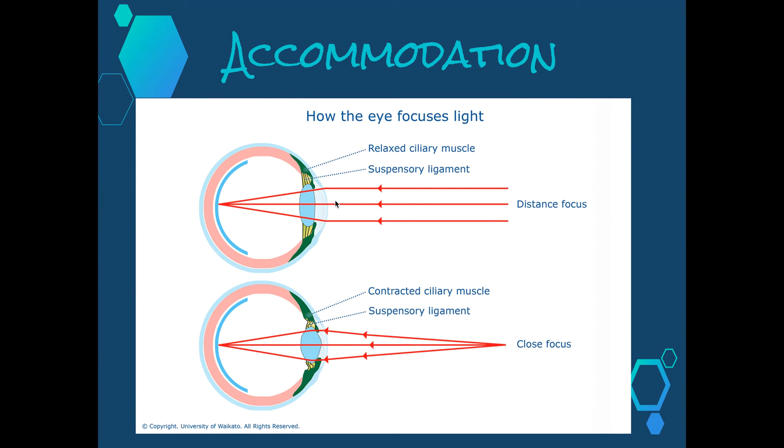For distance objects, the curvature of the lens must be relatively flat. The ciliary muscles are relaxed. They hold the suspensory ligaments taut, which are these parts of the eye here. These ligaments pull on the lens, keeping it relatively flat and allowing the image of distant objects to be focused on the retina.